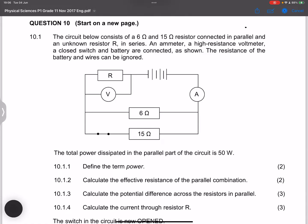And finally, ladies and gents, question 10. So they ask us to look at the circuit. They say the circuit below consists of a 6 ohm and a 15 ohm resistor connected in parallel to an unknown resistor R in series, an ammeter, a high resistance voltmeter, a closed switch and a battery are connected as shown. The resistance of the battery and the wires can be ignored. Right now, let's quickly have a look at it. So they say the total power dissipated in the parallel part of the circuit is 50 watts. So meaning if we look at those two in parallel, they dissipate a total of 50 watts.